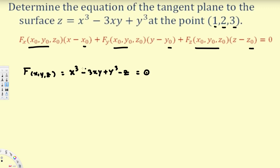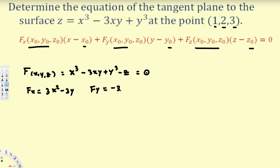Now we find the partial derivatives. For Fx, we treat y and z as constants, giving Fx = 3x² - 3y. For Fy, we treat x and z as constants, giving Fy = -3x + 3y². For Fz, only the -z term survives, giving Fz = -1.